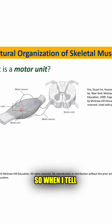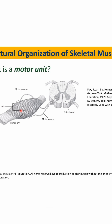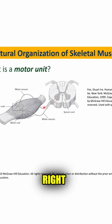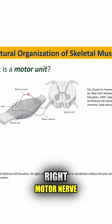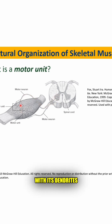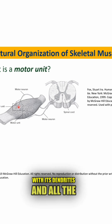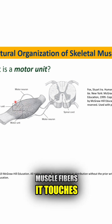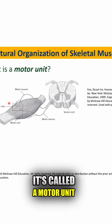So when we say a motor unit, what does that mean? It means this motor nerve, with its dendrites, and all the muscle fibers it touches — that is called a motor unit.